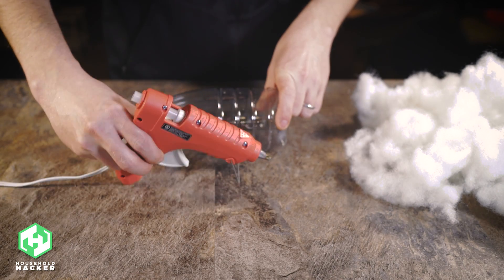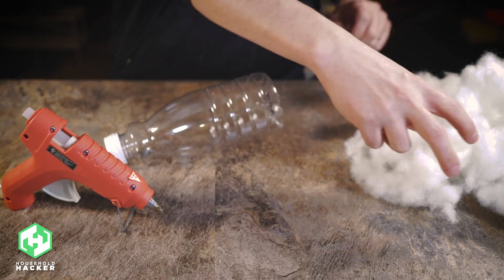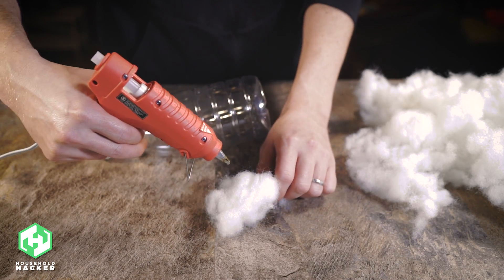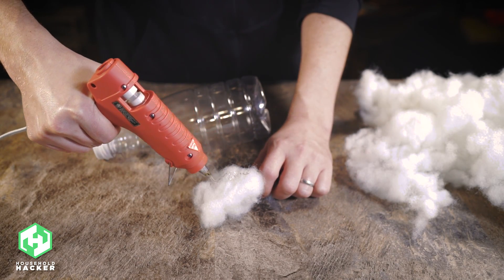Now get out a trusty glue gun and prepare to stick that cotton directly onto the bottle. If you don't have hot glue, standard glue will work, but you're gonna have to wait for it to dry in between layers.